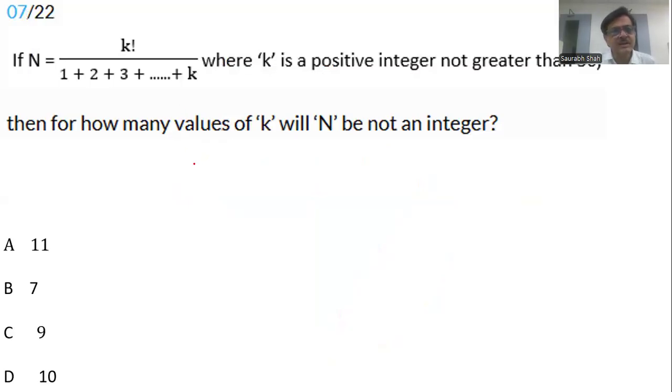Pause if you need to read. The numerator k factorial is good. In the denominator, we have 1 plus 2 plus till k, which equals k times k plus 1 by 2. The 2 will go into the numerator. So k factorial by k becomes k minus 1 factorial. K minus 1 factorial divided by k plus 1.